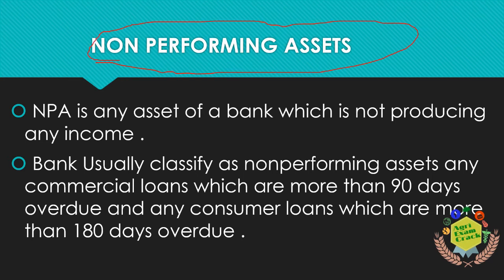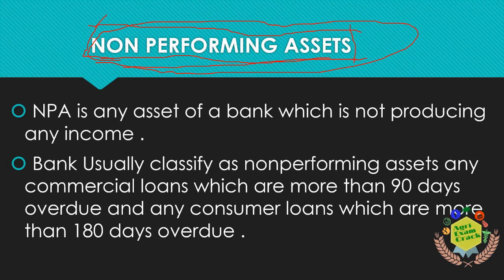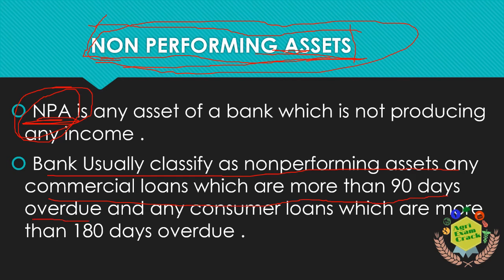Non-Performing Assets (NPA): if asked about problems in banking, mention NPAs. If you take a loan by keeping some security and don't pay for 90 days, that asset is known as a Non-Performing Asset. Banks depend on interest from loans; if interest is not paid for 90 days, the asset becomes non-performing, causing huge losses to the bank.